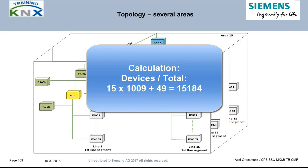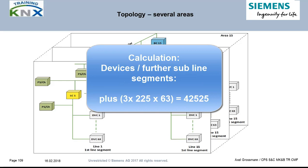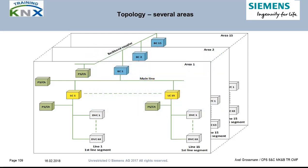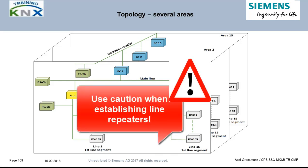Theoretically, you can also extend each sub-line by three additional segments of 63 additional subscribers. Multiplying these additional figures gives 225 × 63 = 42,525. Altogether, it makes a total figure of 57,709. However, in contrast to the use of line and area couplers, repeaters are not unproblematic in operation due to their lack of filter functions.